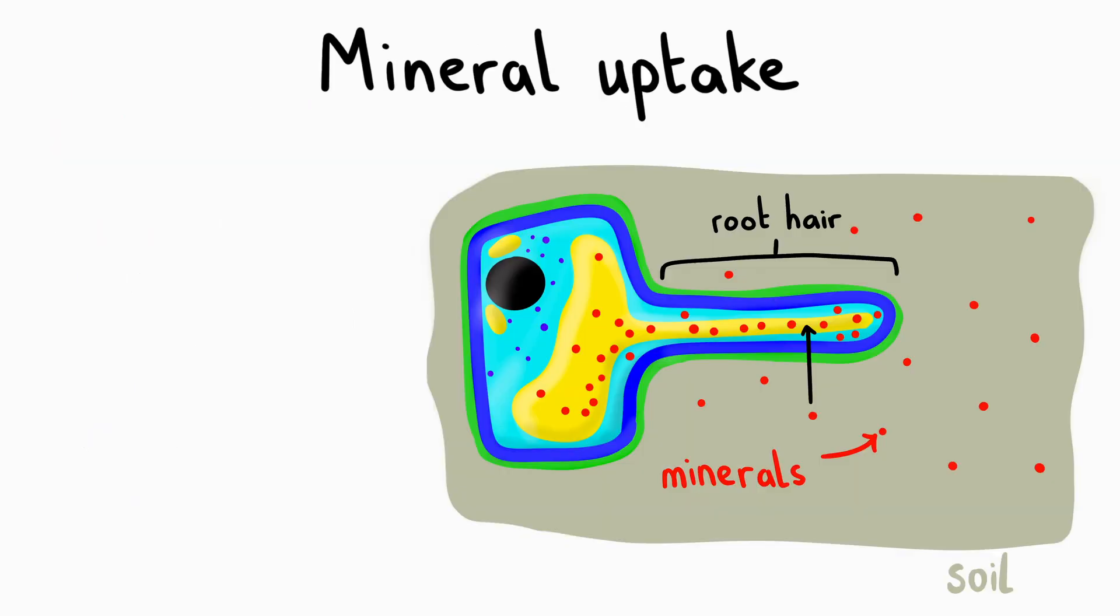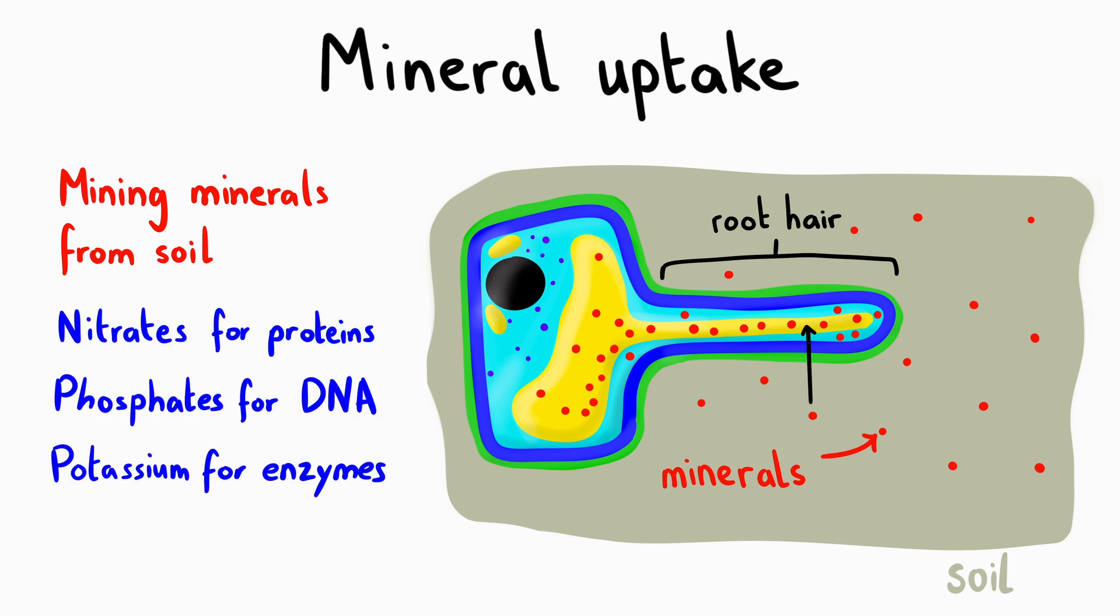Let's look at specific examples of active transport in organisms. In plants, root hair cells actively transport mineral ions from the soil into the plant. The soil solution is very dilute, containing lower concentrations of ions such as nitrates, phosphates, and potassium. For plants to grow, they need to accumulate these ions in much higher concentrations within their cells. This can only be achieved through active transport.